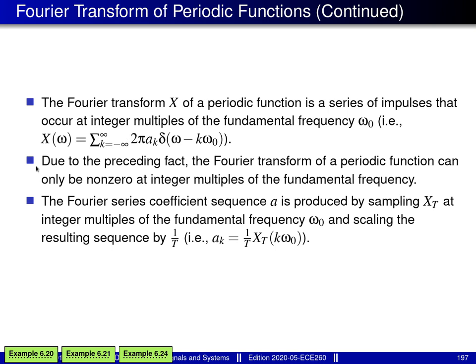Due to this fact, the Fourier transform of a periodic function is zero almost everywhere — the only places where it can be non-zero are at integer multiples of the fundamental frequency. Additionally, the Fourier series coefficient sequence for a periodic function can be computed using the Fourier transform by sampling big X subscript capital T at integer multiples of omega naught and scaling by a factor of 1 over T.